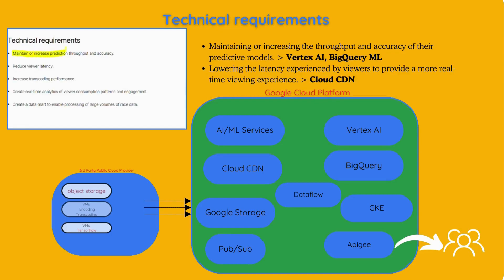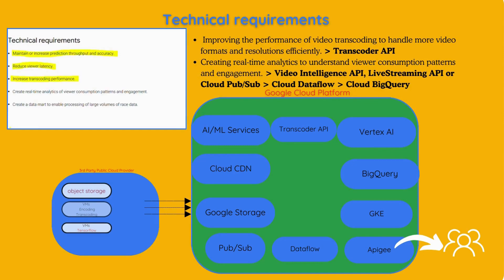Technical requirements include: maintaining or increasing prediction throughput and accuracy; reducing viewer latency to provide a more real-time viewing experience; increasing transcoding performance to handle more video formats and resolutions efficiently; creating real-time analytics of viewer consumption patterns and engagement; and building a data mart to enable processing of large volumes of race data, helping store and query extensive datasets effectively.